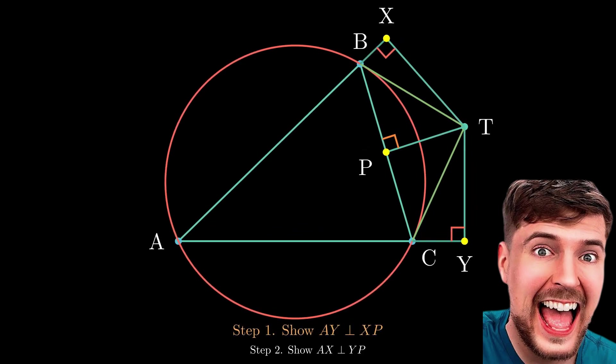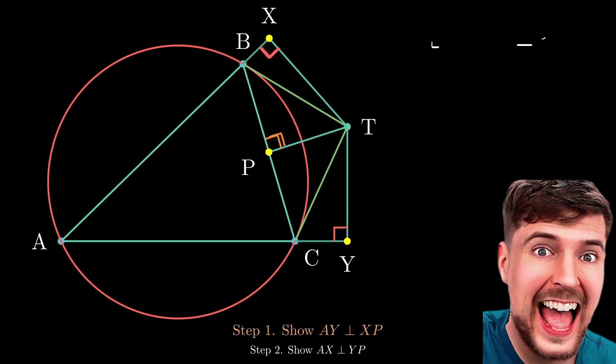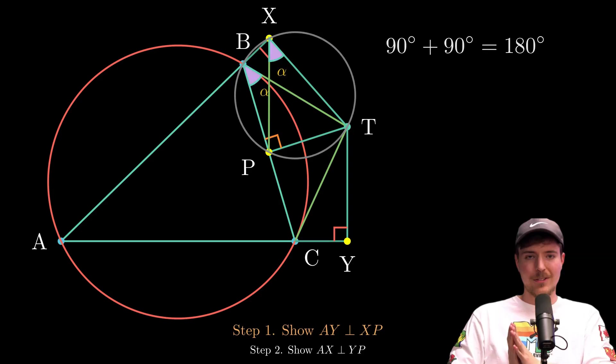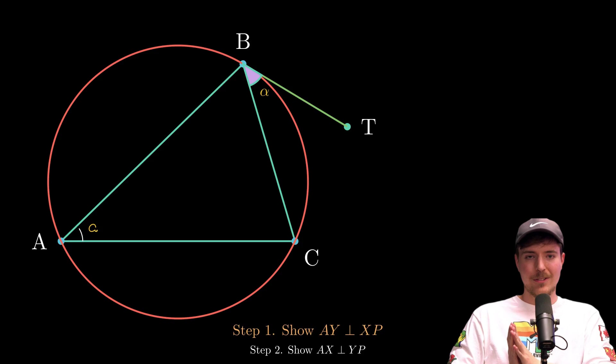Step one, let's break it down. We've got TP and TX both hitting BC and BX at right angles. That makes a special setup where B, P, T, and X all chill on the same circle. And because of that, the angle at X touching our triangle matches the angle at B because these are two angles that intercept the same arc. Since TB is tangent to our circle, angle BAC is equal to angle TBC. That's called a tangent angle.